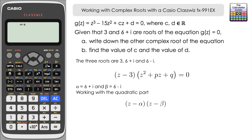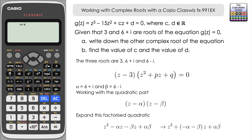Let's expand out these two factors. We get Z squared, then minus alpha·Z, minus beta·Z, and then plus alpha·beta. Factorising the middle terms, this becomes Z squared minus (alpha plus beta)·Z plus alpha·beta, and that form will help us find the coefficients.